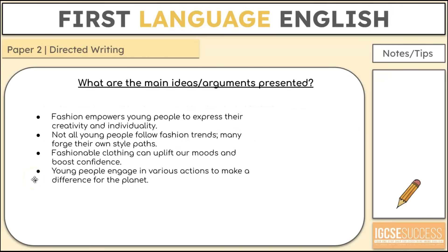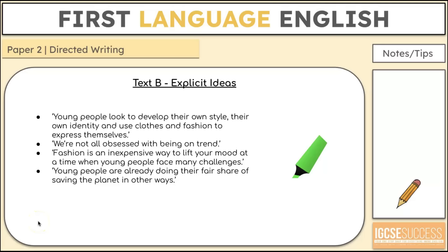The main ideas from Text B are: one, fashion empowers young people to express their creativity and individuality; two, not all young people follow fashion trends — many forge their own style paths; three, fashionable clothing can uplift moods and boost confidence; four, young people engage in various actions to make a difference for the planet. The three ideas I would highlight are: young people developing their own style and identity; fashion as an inexpensive mood lift; and young people already doing their fair share of saving the planet in other ways.